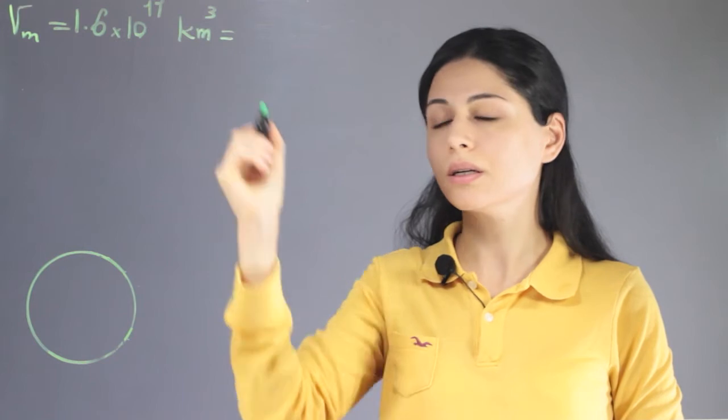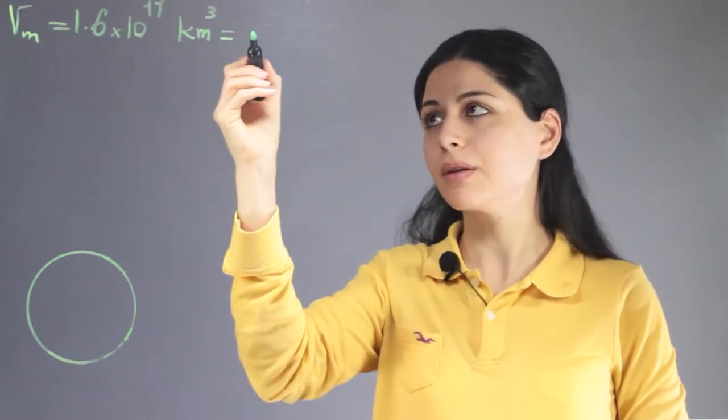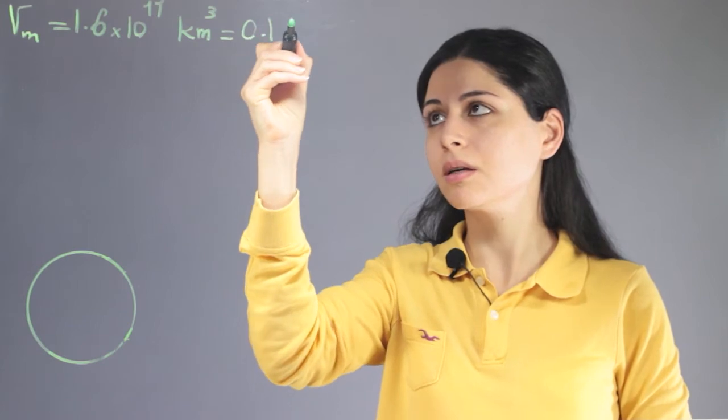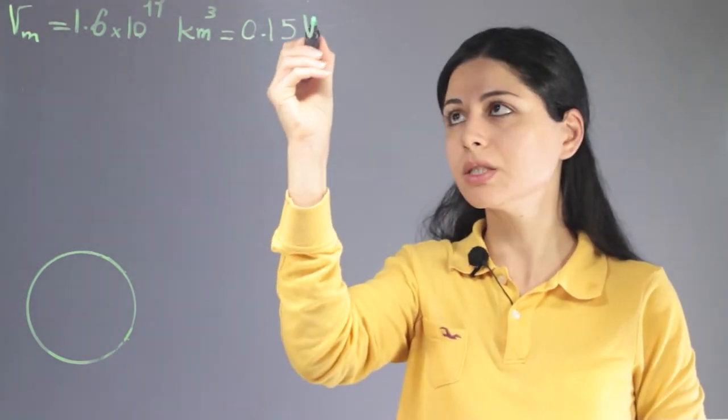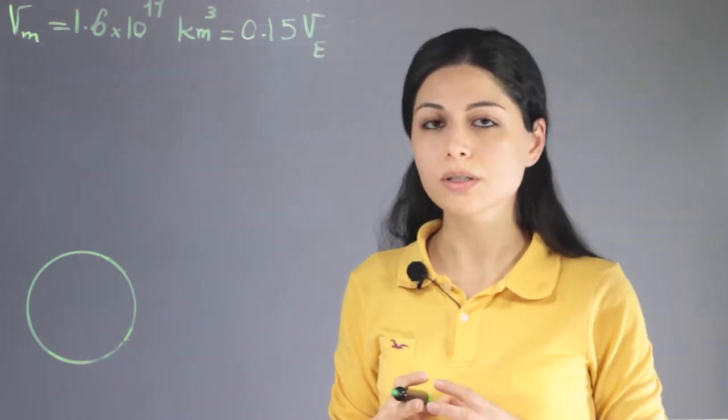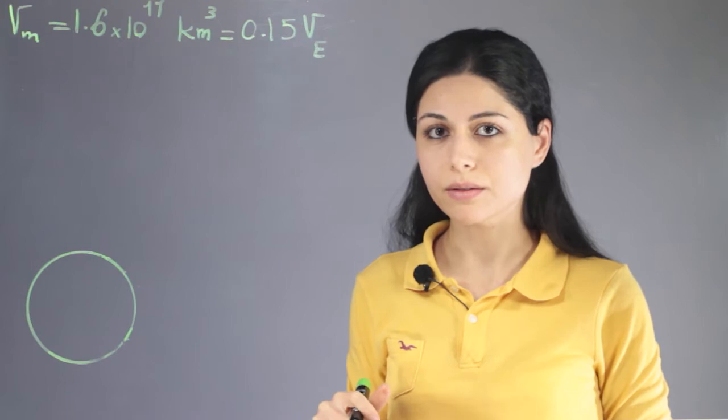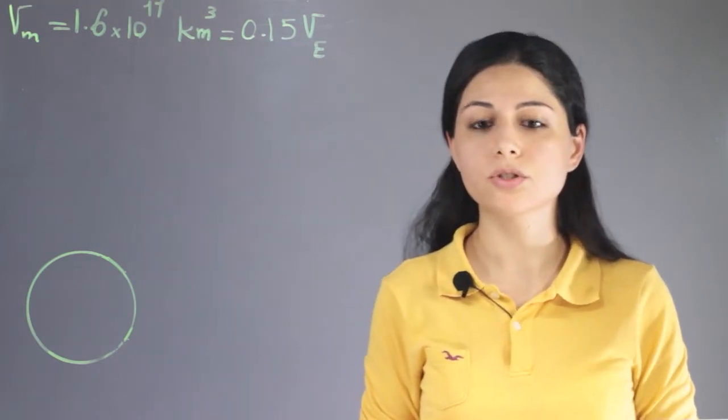This value is almost equal to 15% of the volume of the Earth, so Mars is a bit smaller than Earth. To calculate the volume of Mars, we just need the radius of Mars.